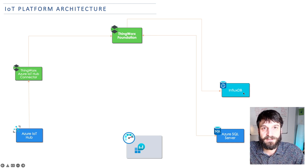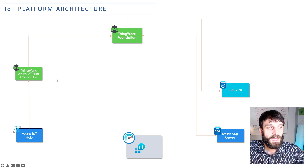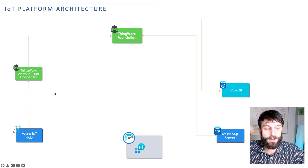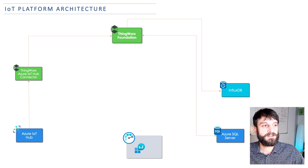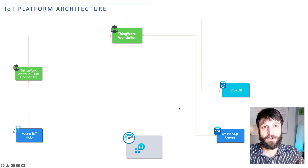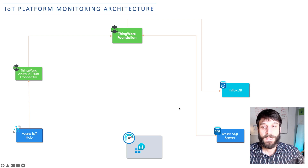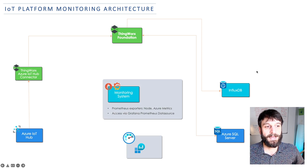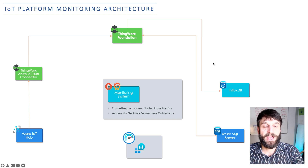We've got ThingWorx Foundation backed by InfluxDB as the data persistence provider for time series, and an Azure SQL Server providing the relational database for ThingWorx. We've got an IoT Hub Connector providing data ingest over MQTT messages and Azure IoT messages. I also have Azure Metrics and Log Analytics wired up to some Azure services. In the middle, I've placed a monitoring system running on a virtual machine with Prometheus, which is scraping metrics and acting as a time series database to collect, store, and provide metrics back to Grafana.